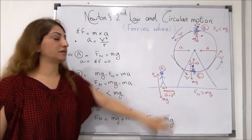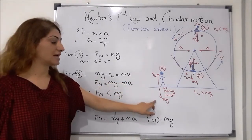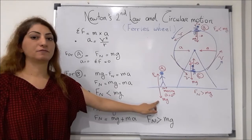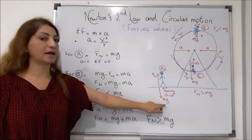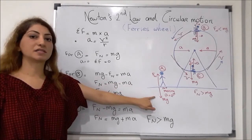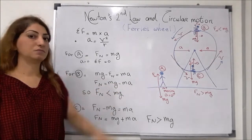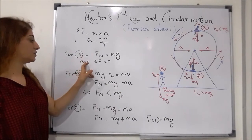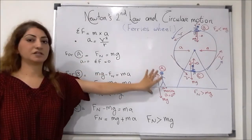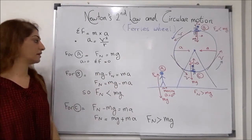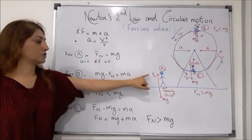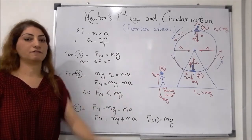There are two forces acting on person A: the normal force and the weight, M times G. They act in opposite directions but are equal in size because the person is not moving. Therefore the sum of forces equals zero, and the normal force equals the weight.